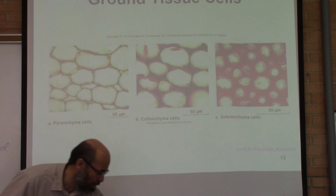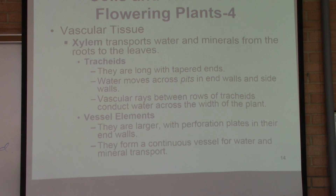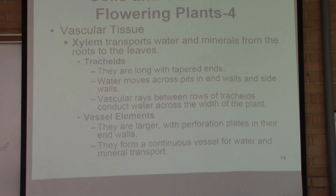The third type of tissue is vascular tissue — the transport system of the plant. There are two types: xylem and phloem. Xylem's function is to carry fluid and minerals from the root system upward. Phloem is for transport of different chemicals, carbohydrates, and nutrients that are produced by the plant — it distributes those products that are made within the plant.